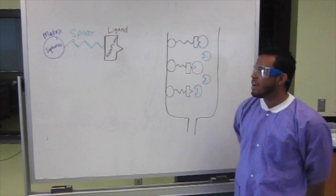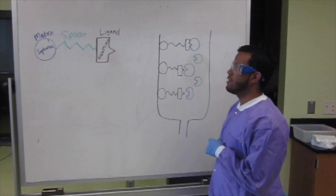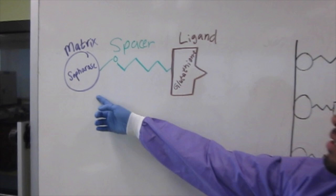The basic setup for affinity chromatography—one of the most important things—is to think about your resin. The resin is typically formed between three different categories: one being the matrix, the spacer, and the ligand that's actually going to bind to your protein.